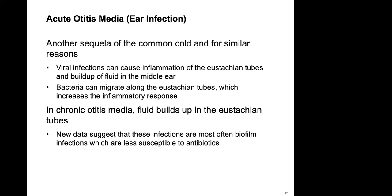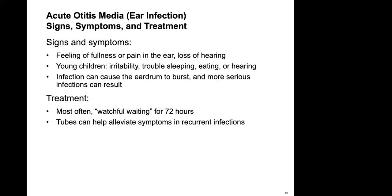One way to deal with chronic ear infections is to have tubes put in the ears to help drain fluid and prevent buildup. Signs and symptoms include fullness or pain in the ear, clogged or lost hearing, and in young children irritability and trouble sleeping, eating, or hearing. The infection can cause the eardrum to burst. Most often it is just watchful waiting for 72 hours, and recurrent infections often lead to tube placement — something I personally experienced as a child.